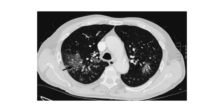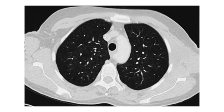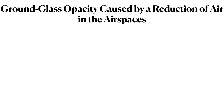This is how ground glassing looks — even with increased attenuation, the vessels and airways remain visible. A CT scan with diffuse ground glassing may look nearly normal at first, but to detect diffuse ground glassing you must compare the lungs with the air in the trachea. If you compare these two places, you'll find there is increased attenuation in the lungs compared to the trachea, which is more indicative of a diffuse disease.